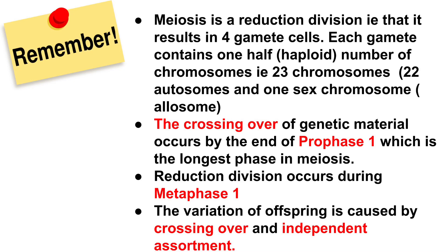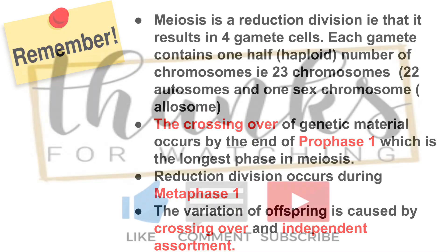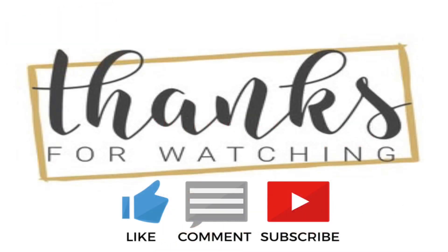The reduction division occurs during anaphase one. The variation of offspring is caused by crossing over and independent assortment. Thanks for watching — don't forget to like and subscribe and have a good day.